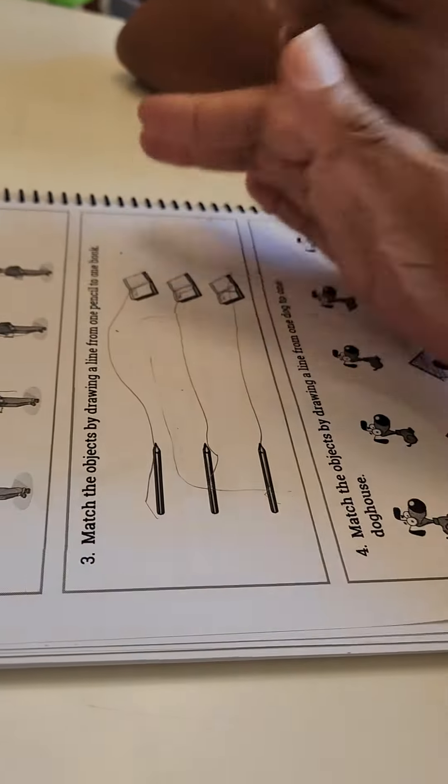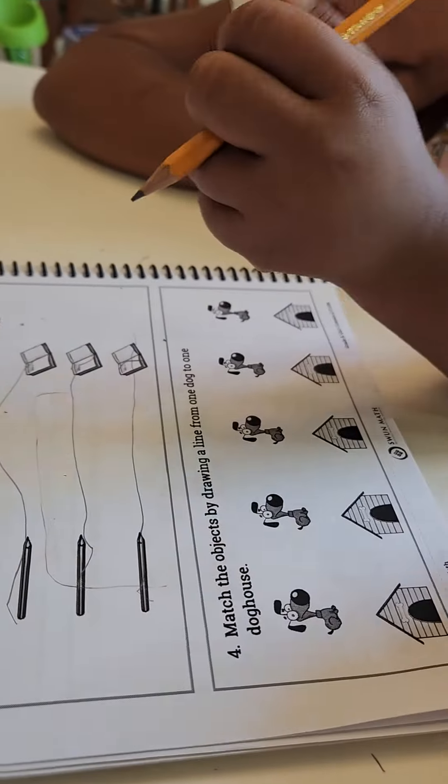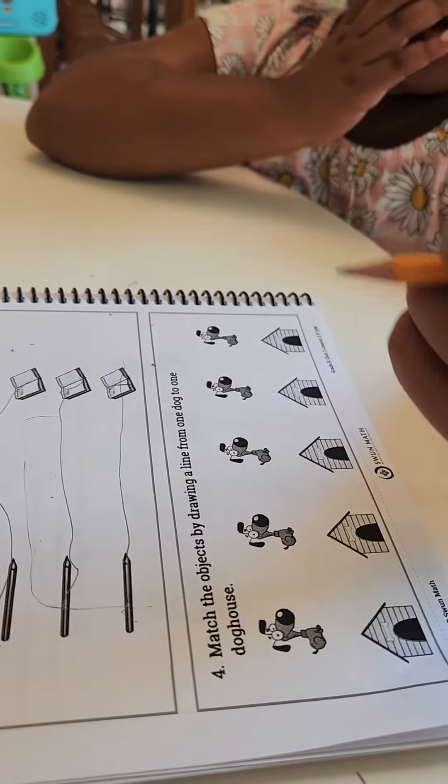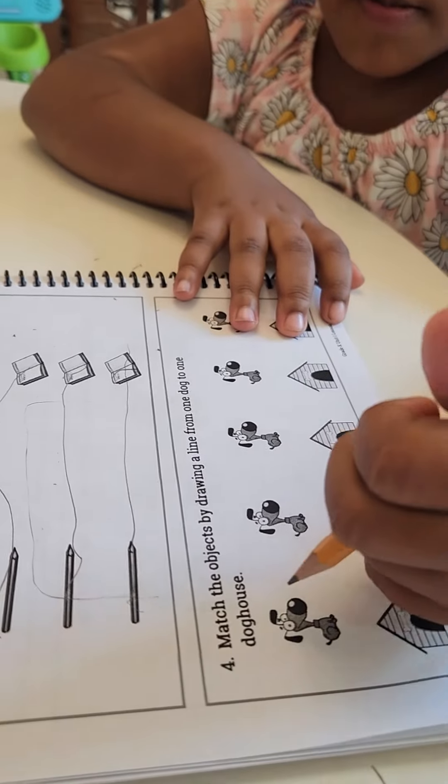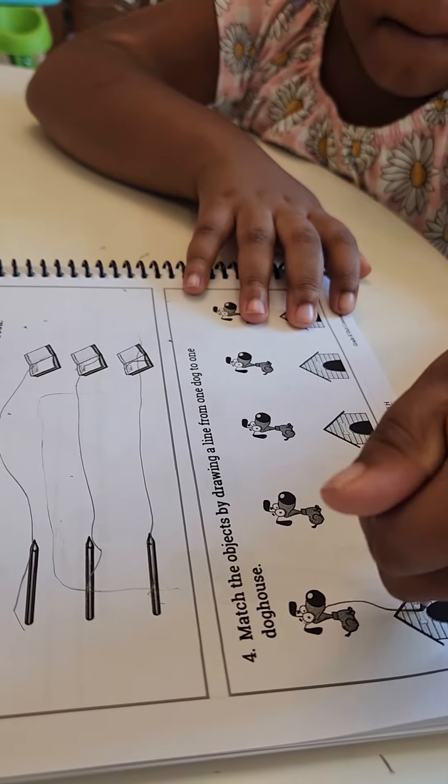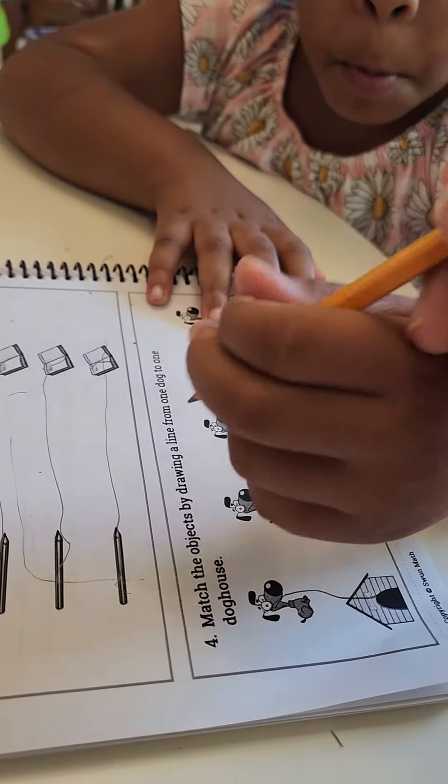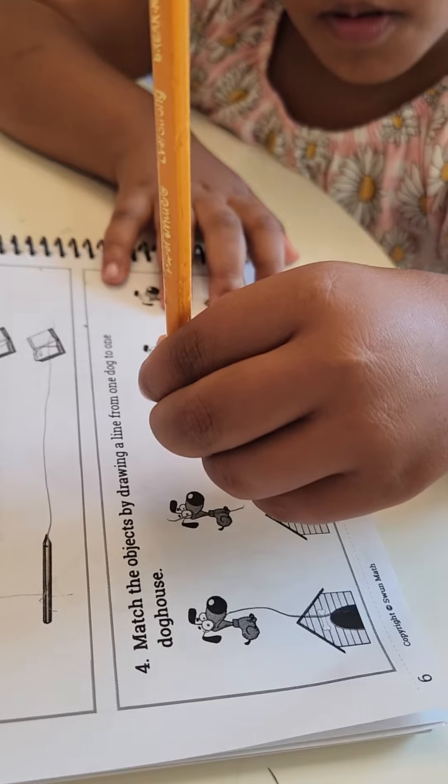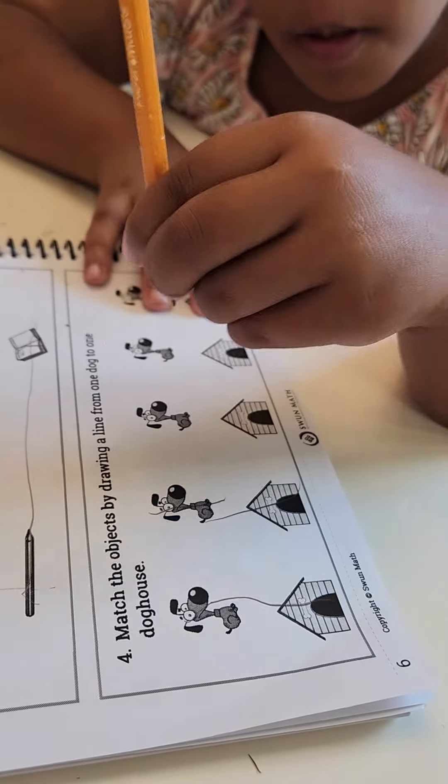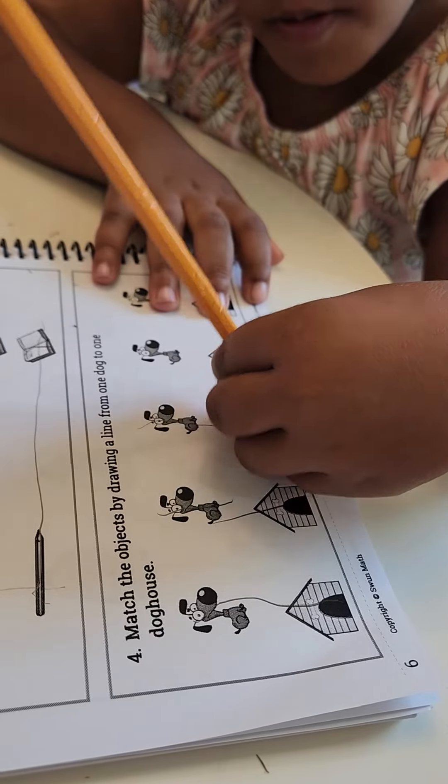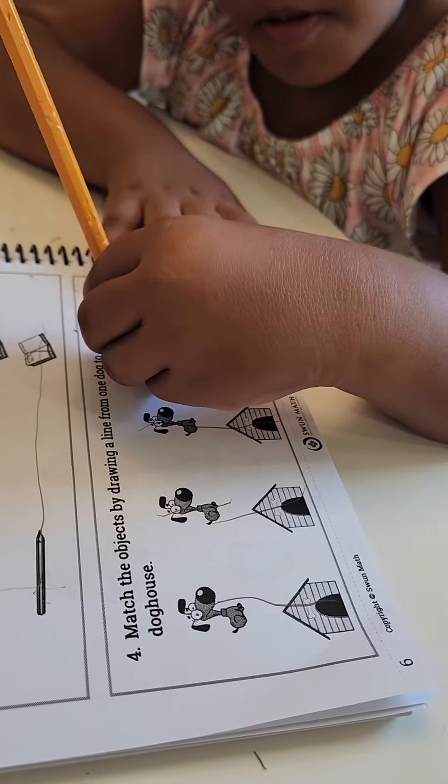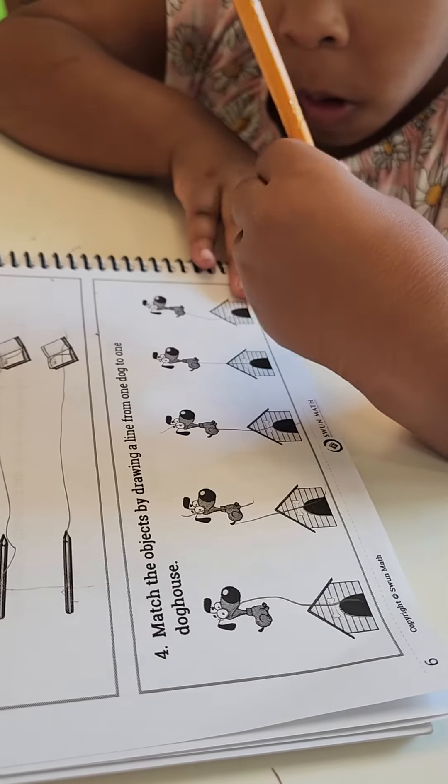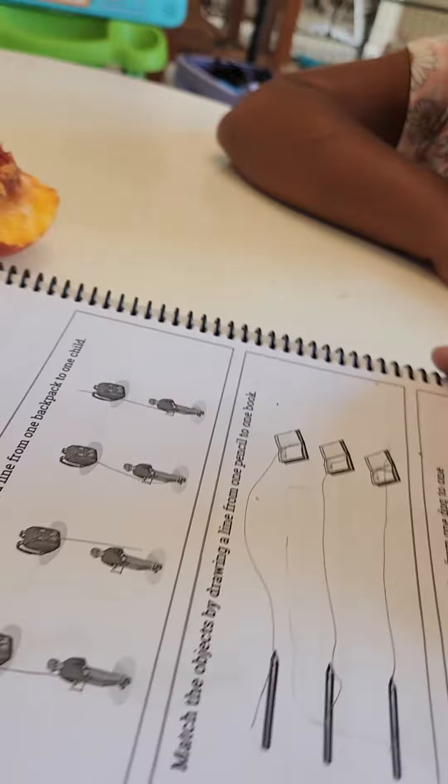Good job. Let's draw a line from the dog to one doghouse. One dog with one doghouse. Let's get our pencil straight. There we go, draw all the way from the dog to the doghouse. Let's do another one. Give every dog a doghouse. Good job, let's go to the next page.